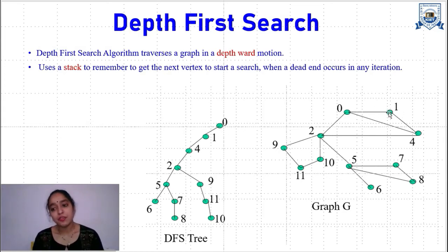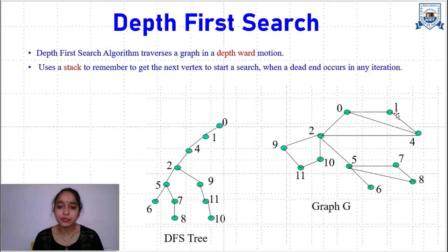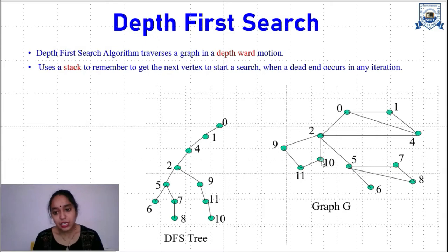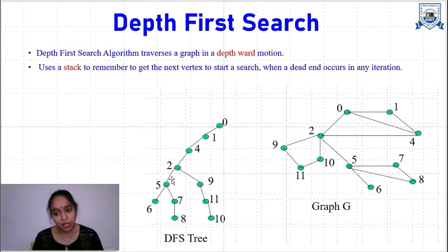Adjacent of 1 is 0 and 4, in which 0 is already visited, so we go to 4. From 1 we have gone to 4. Now adjacent of 4 is 0, 1 and 2, in which 0 and 1 are already visited, so we go towards 2. Adjacent of 2 is 0, 9, 10 and 5. I have chosen 5 first, so we go towards 5. From 5 we go into depth till 6. The adjacents of 5 are 7, 2 and 6, in which 2 is already visited, so we go for 6.